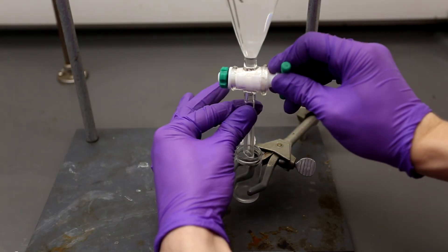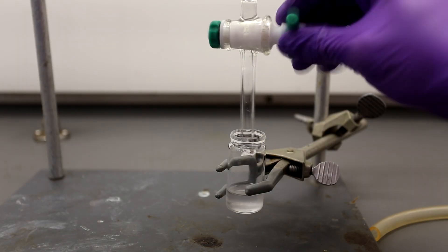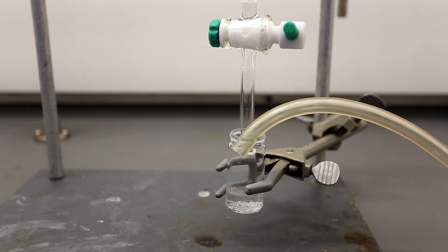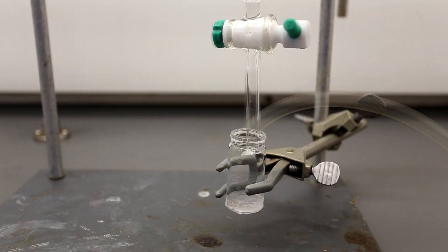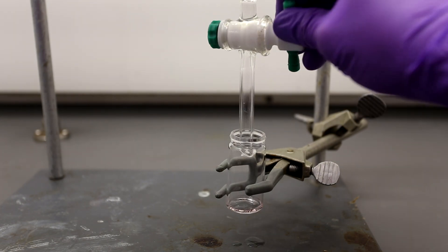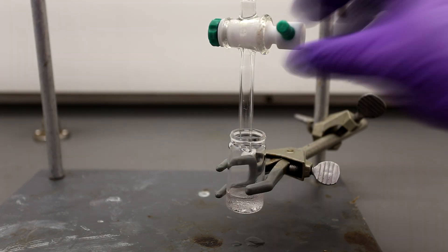I used a separatory funnel and a small vial to evaporate the ether. I opted to use this method because using a rotovap could stink up the lab. This way the butyric acid stays in the fume hood the whole time.